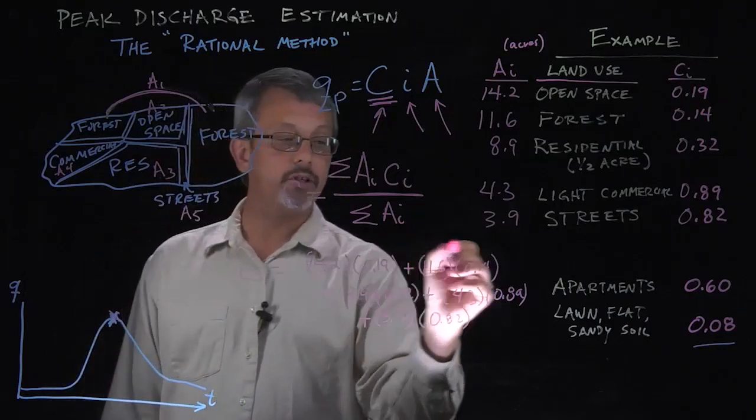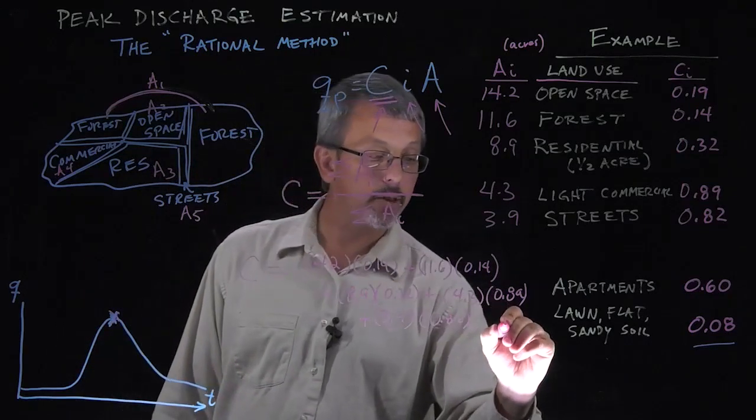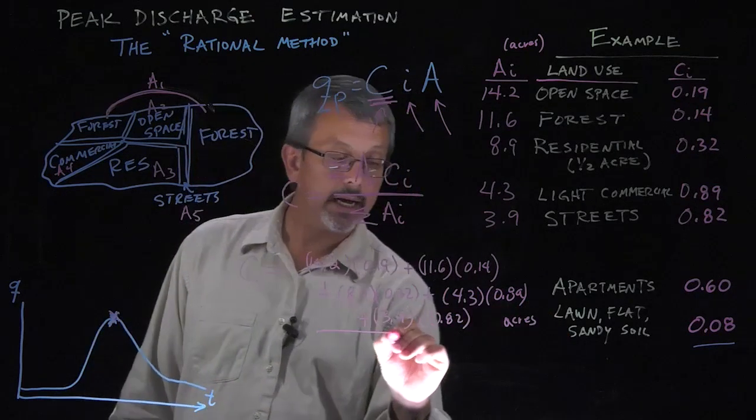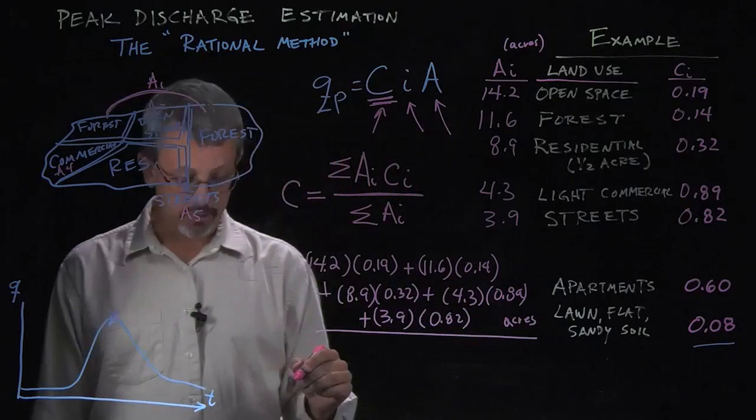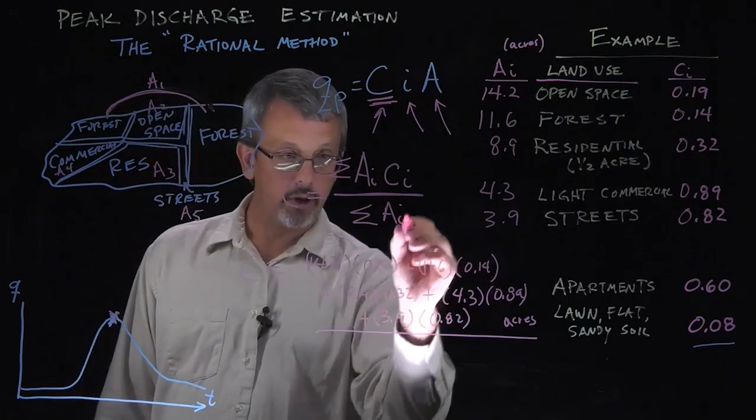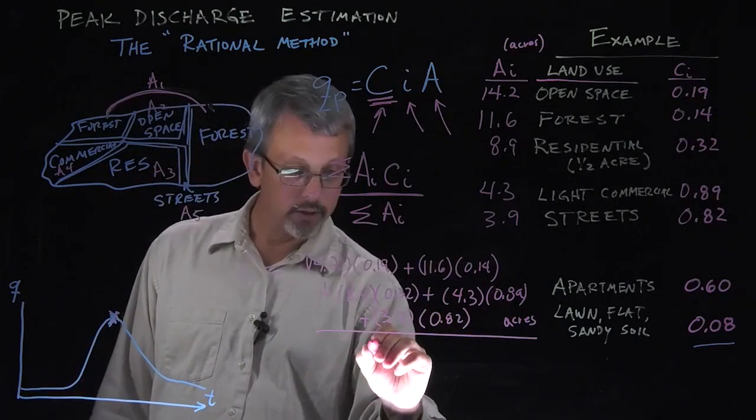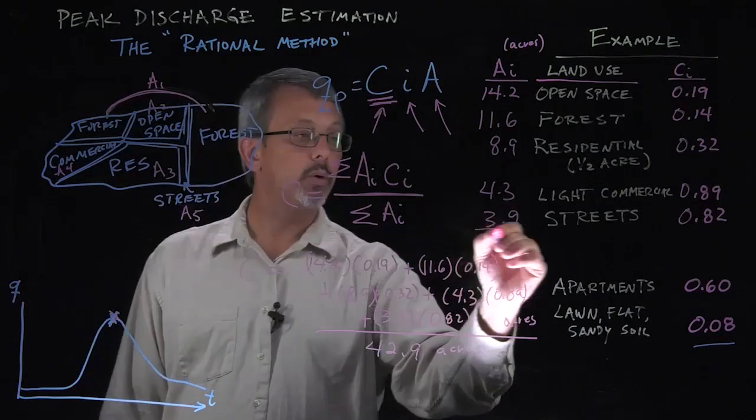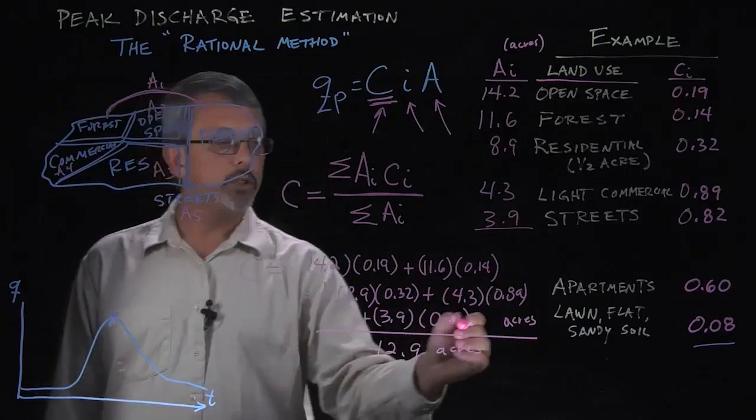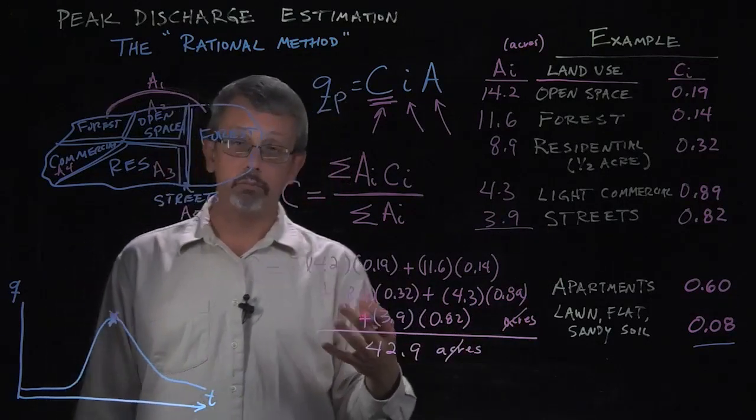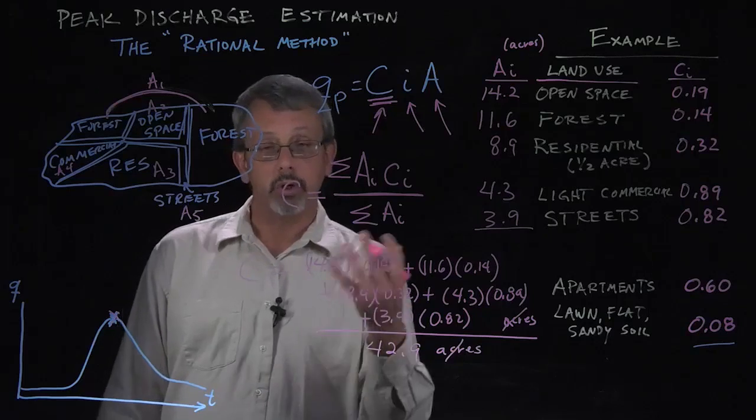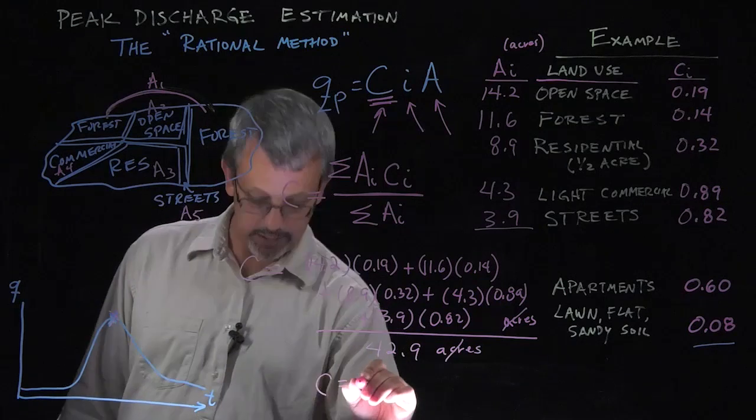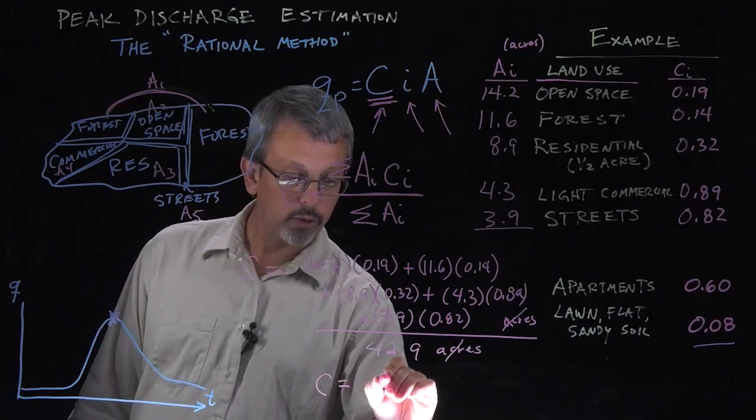And I recognize that these coefficients don't have any units, but this entire thing is going to be in units of acres. And then when I divide that entire value, it's going to be the total of all the area, which we'll see is 42.9 acres if you sum up all this total amount of area here. When you do that, it's going to cancel out acres and the value you get is unitless, which corresponds with our unitless coefficient. And if I do that in this case, I get a value C equals 0.33.